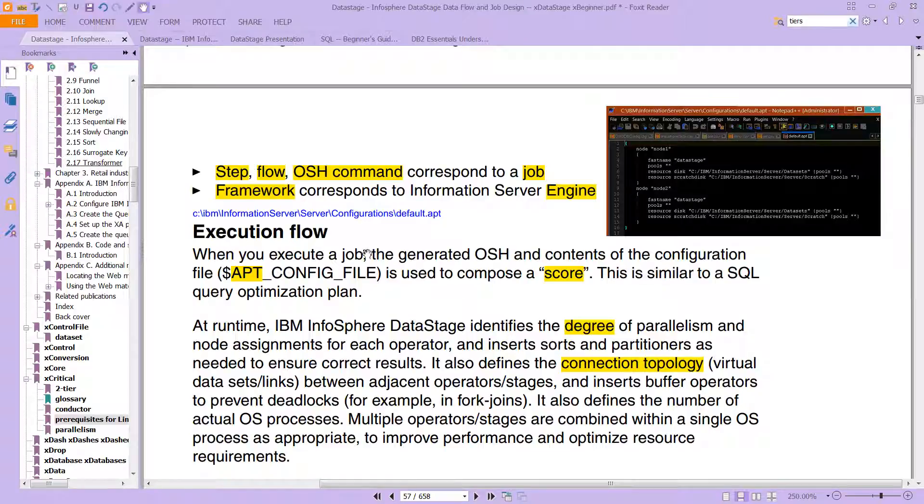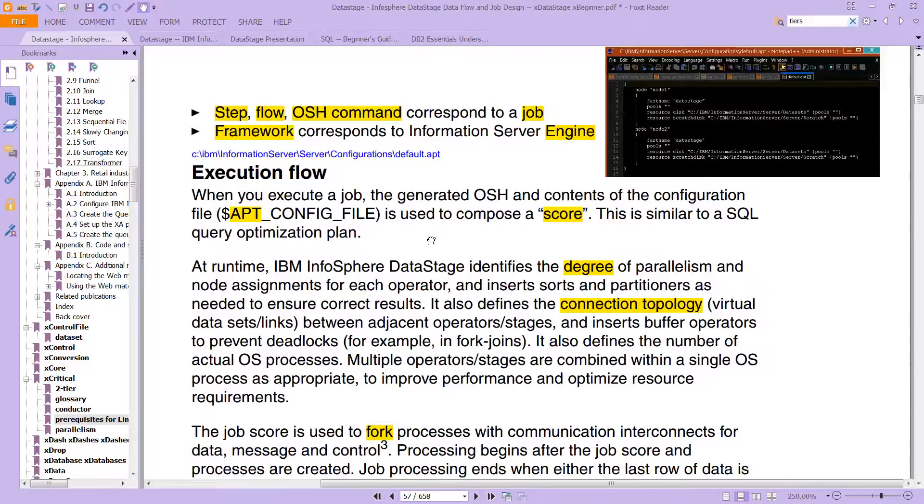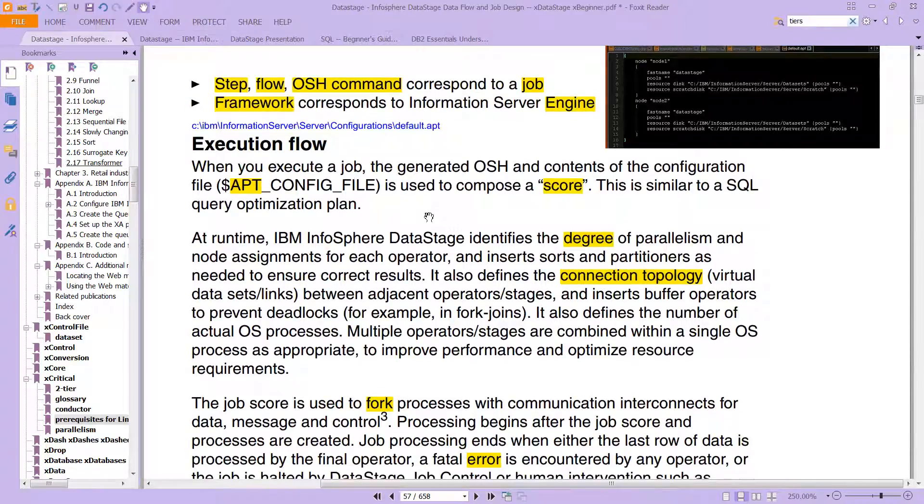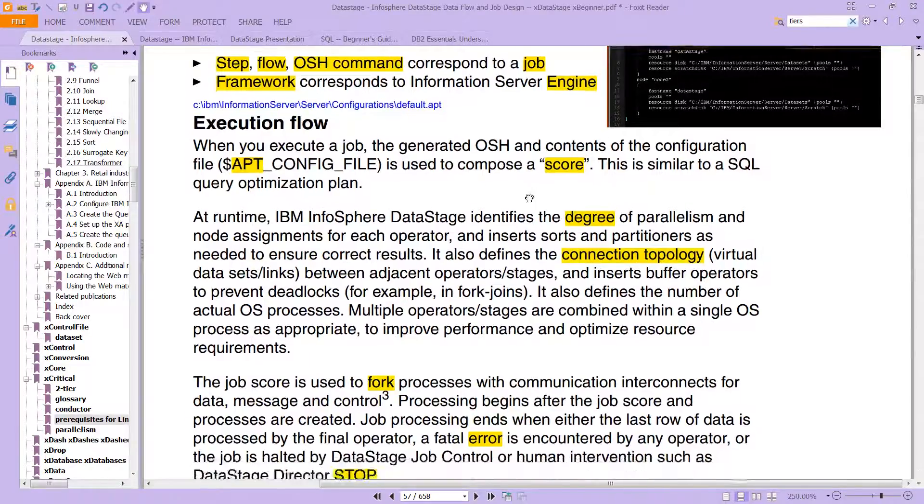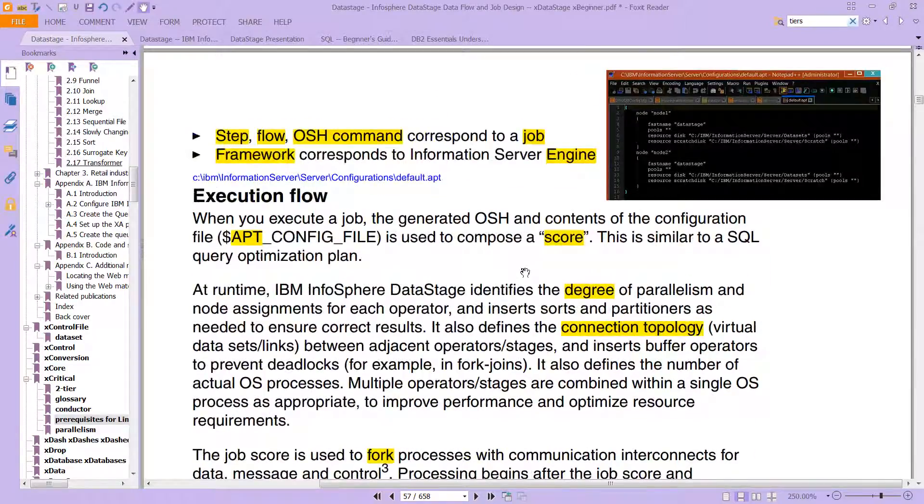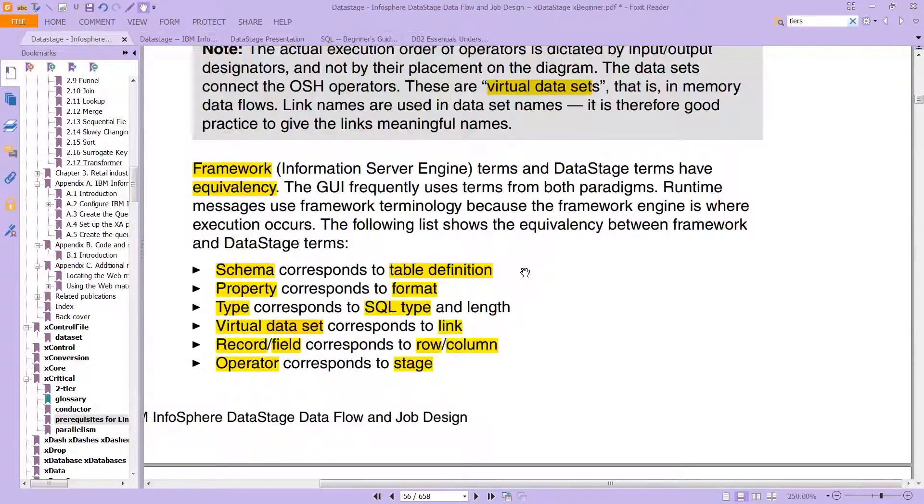And again, we talked earlier about the APT or the configuration file, which again generates the OSH, and that itself is orchestrate, which uses terminology from an orchestra, even uses the term player, and so on. This is, by the way, the default APT file that we looked at earlier. So that terminology will come into play pretty soon, so you need to know what the major terms are.